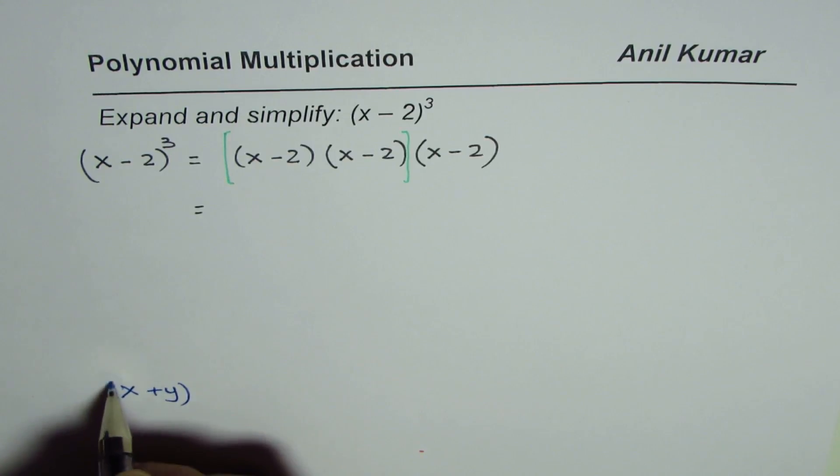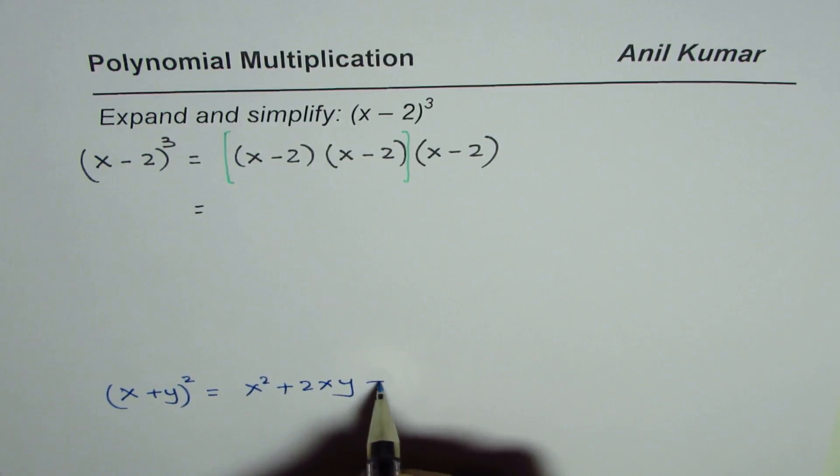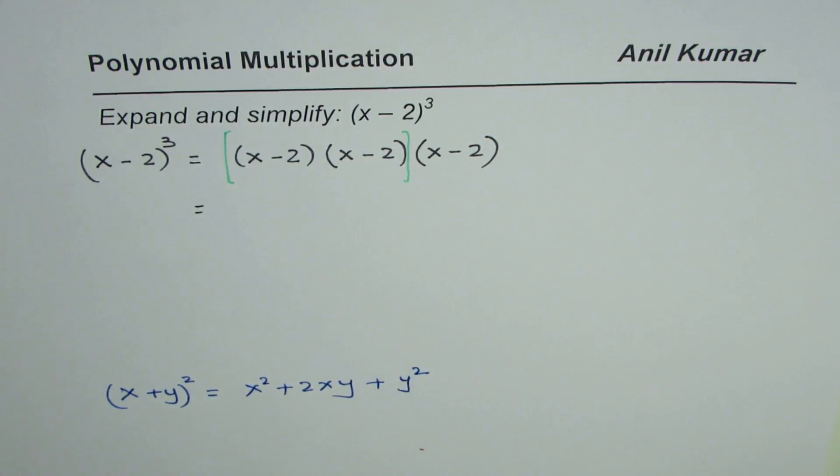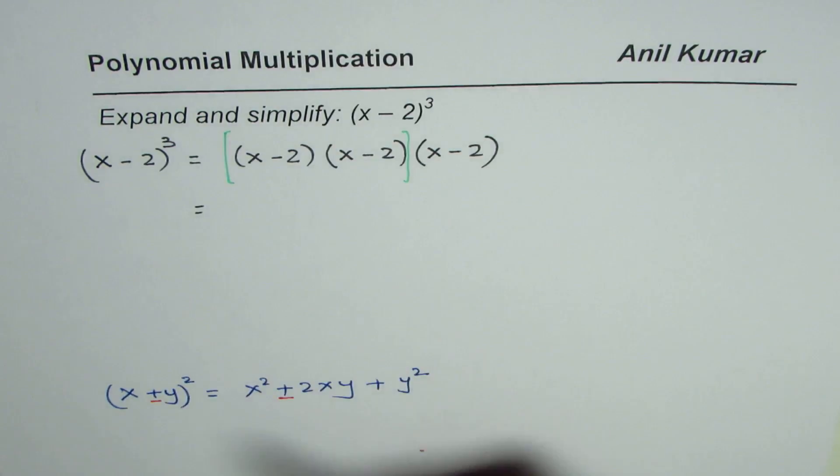x plus y whole square equals x square plus 2xy plus y square. And in case this is negative, then we have negative here. You could adopt the formula, apply the formula and get the answer.